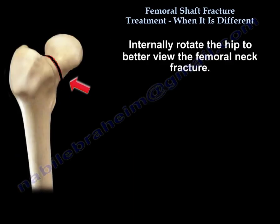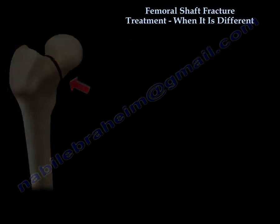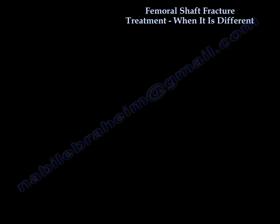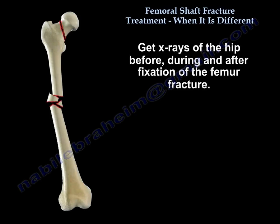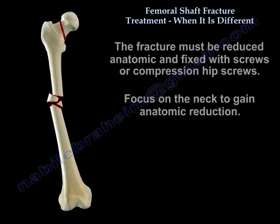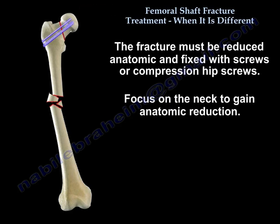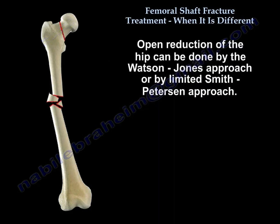Internally rotate the hip to better view the femoral neck fracture. Get X-rays of the hip before, during, and after fixation of the femur fracture. The fracture must be reduced anatomically and fixed with screws or compression hip screws. Focus on the neck to gain anatomic reduction. Open reduction can be done by Watson-Jones approach or by limited Smith-Peterson approach.